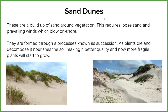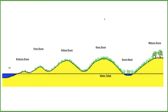They're formed through a process known as succession, which we've already covered in a past lesson. So as the plants die — these pioneers, these really hardy plants — it creates a better quality soil, which allows more fragile plants to take hold.